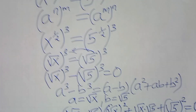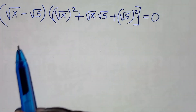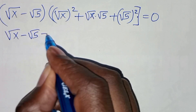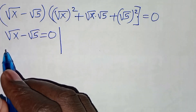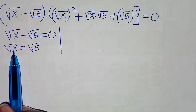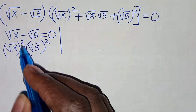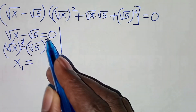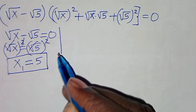We now have two parts. The first part is √x minus √5 equals 0, giving us √x equals √5. Squaring both sides to eliminate the square root, our first value x₁ is equal to 5. This is a real solution.